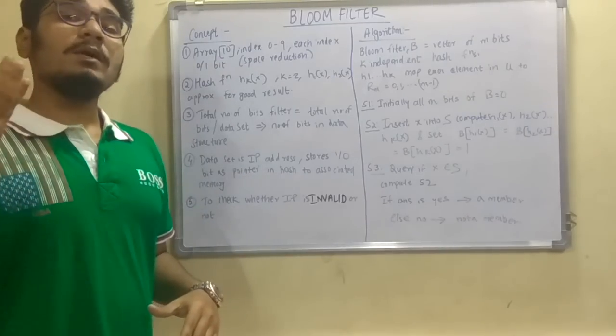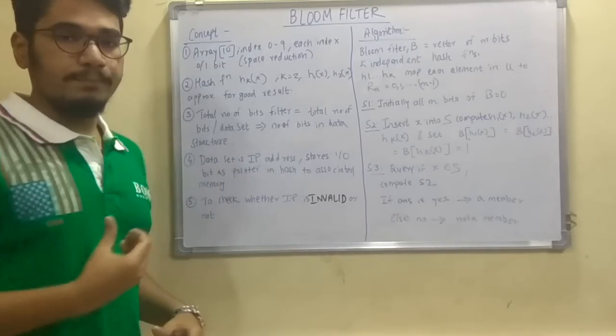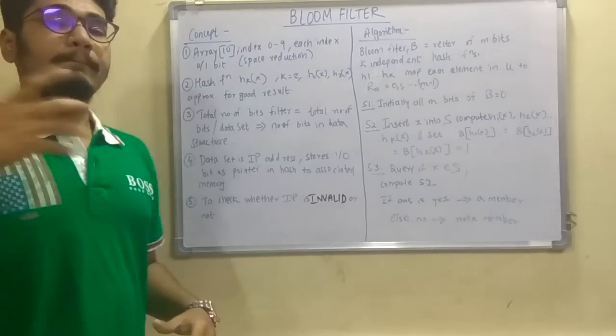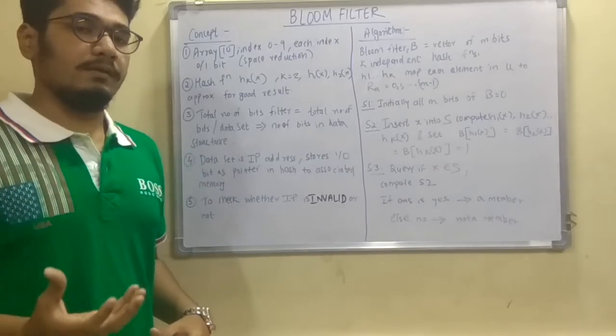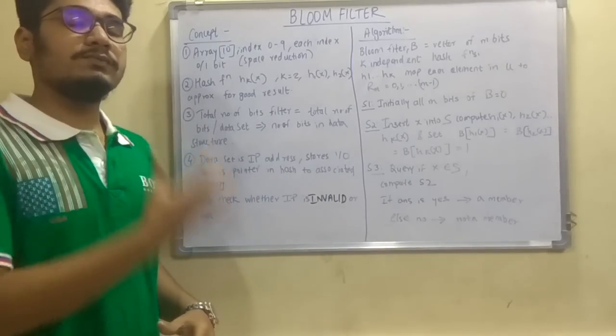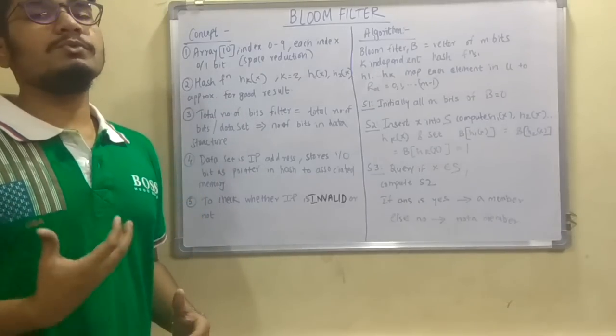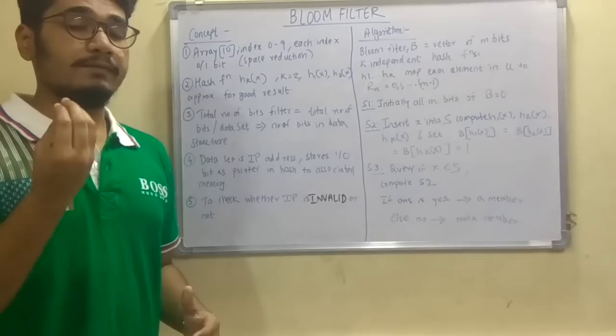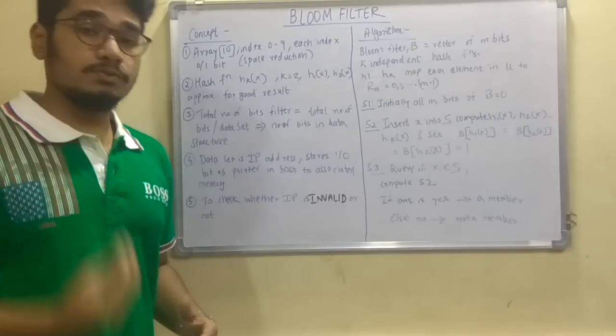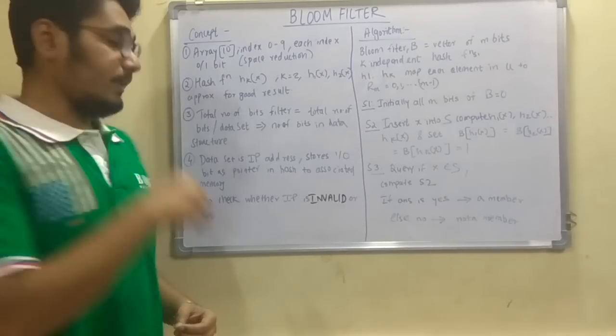So we saw that we maintain a bit position that is 0 or 1. So this bit that is 0 or 1 acts as a pointer to this IP address and so it will map to its memory address. So a permanent storage would be allocated to this. Next, so this bloom filter is basically used to check whether the IP address that we are capturing or we are storing is valid or invalid.